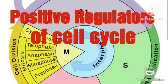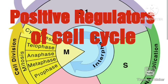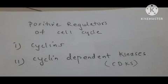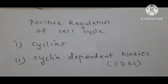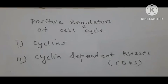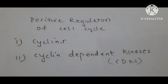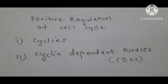Hello students. In today's lecture we are going to talk about the positive regulators, meaning positive signals for a cell to enter inside a cell cycle. Which are these positive signals or regulators, we will see in detail. First, let's start with the positive regulators of the cell cycle. The first positive regulator is cyclins.